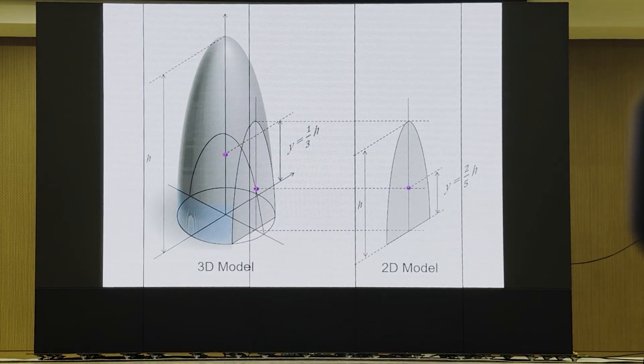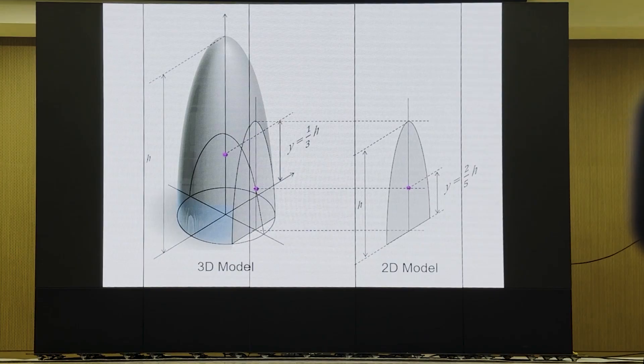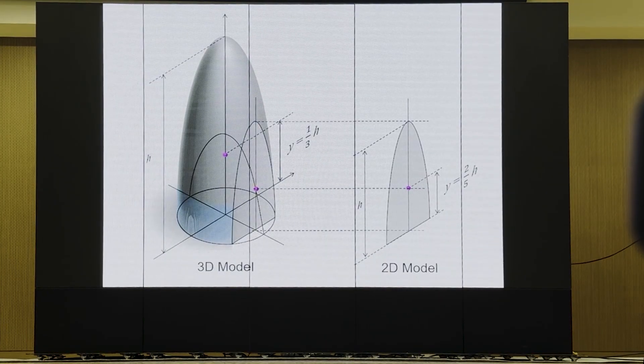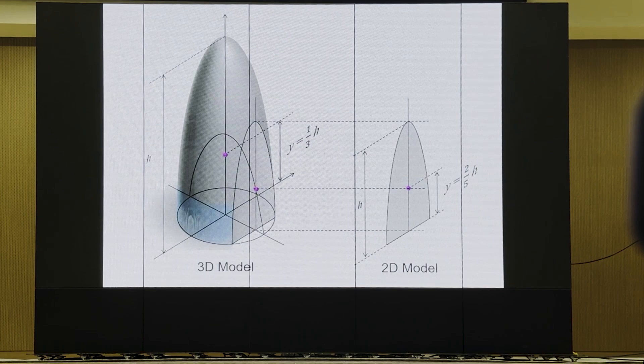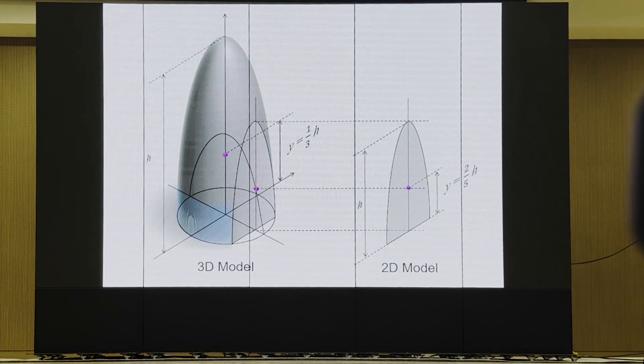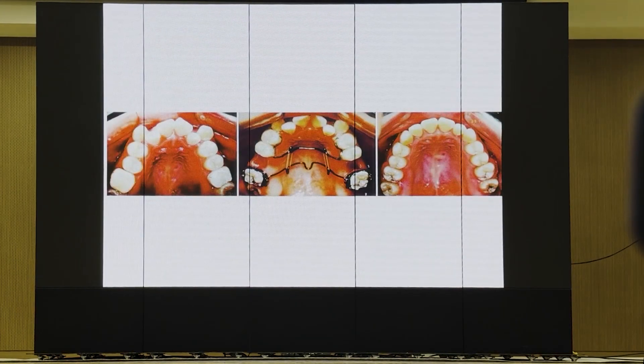Theoretically, the center of resistance is located somewhere here. One third of the distance of the root in three-dimensional model. And in two-dimensional model, it is located in two-fifths length of the root, measured from the alveolar crest in two-dimensional model. And many experiments showing many papers are published regarding the location of center of resistance. So it is not that difficult to locate the center of resistance here. Theoretically, I mean.